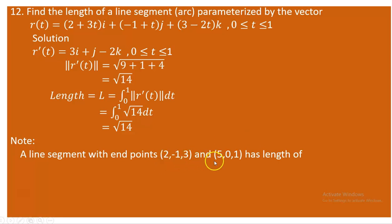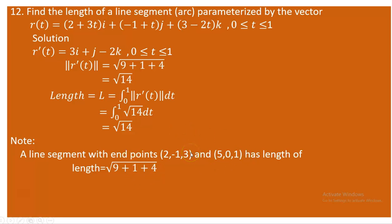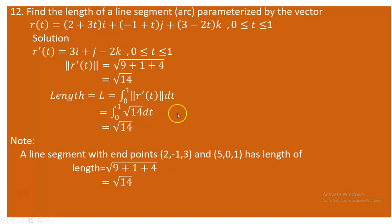The length of this segment equals the distance between these two points. Using the distance formula: (5-2)² = 9, (0-(-1))² = 1, and (1-3)² = 4. The distance is √(9 + 1 + 4) = √14. Comparing this result with our earlier computation using the parametric integral approach, both agree: the length is √14, confirming that the vector calculus method is consistent with elementary distance formula.